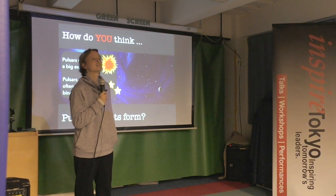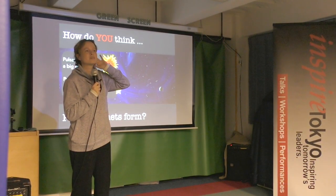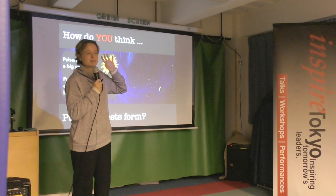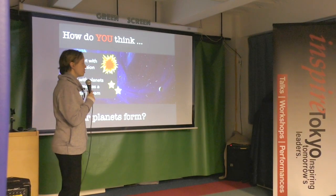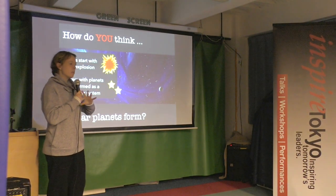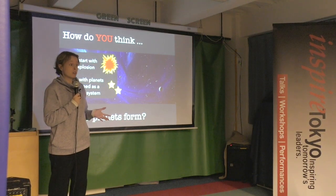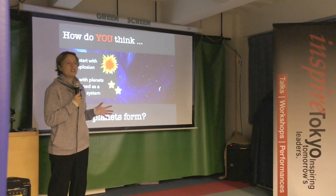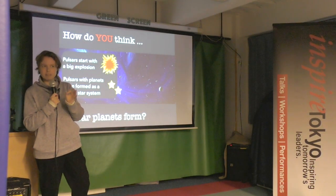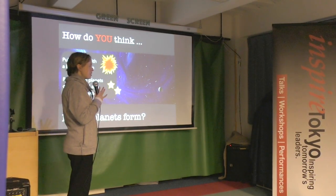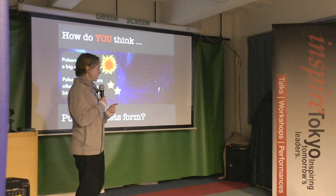Another idea: debris left over from when the star collapsed into a neutron star gets picked up by its gravity and reforms planets. Computer models were done on whether matter blown off in the explosion could come back and be recaptured, but the conclusion was that not enough matter could come together after the explosion — a legitimate theory, but not the favorite.